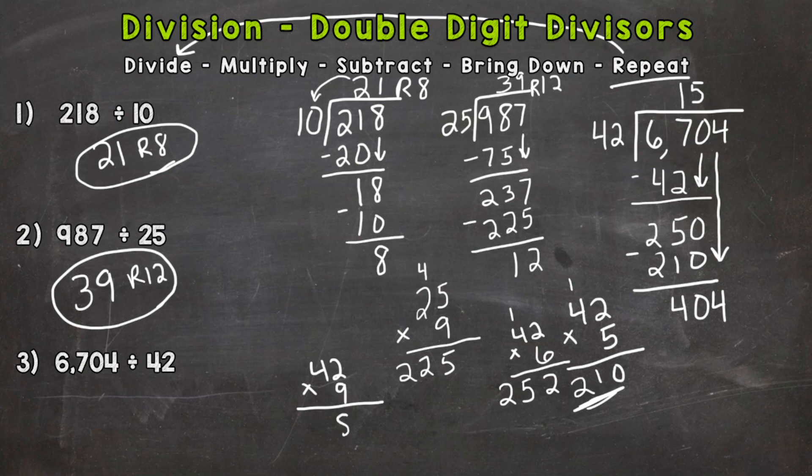9 times 4 is 36, plus that 1 is 37. So 378, and that is as close as we can get. So let's put our 9 up here. 9 times 42 is 378, and now we need to subtract.